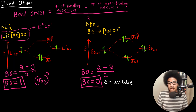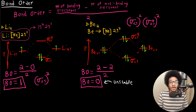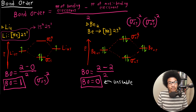For practice, let's write out the electron configuration for Be2. We have sigma 2s2 and sigma star 2s2 — two electrons in the sigma 2s and two electrons in the sigma star 2s. That is the electron configuration for beryllium dimer.